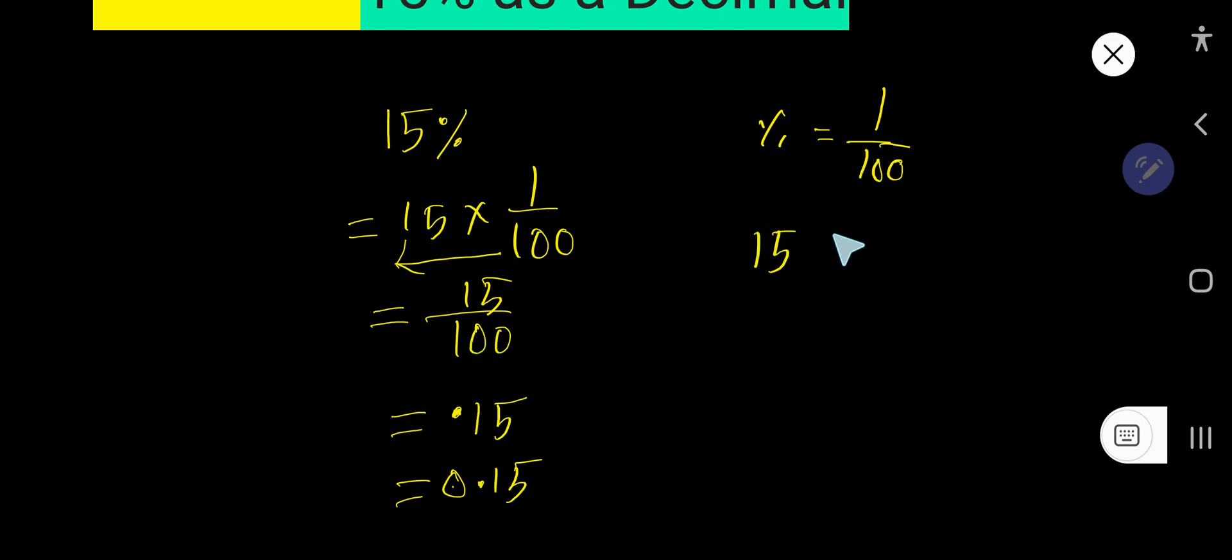This is the first way to convert 15% to decimal. We can also use another way. 15% means 15 divided by 100. Now you need to divide 15 by 100.